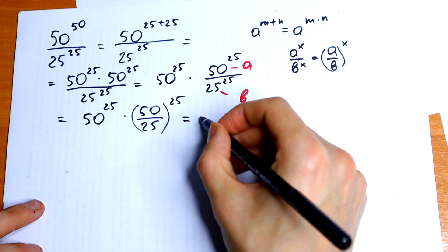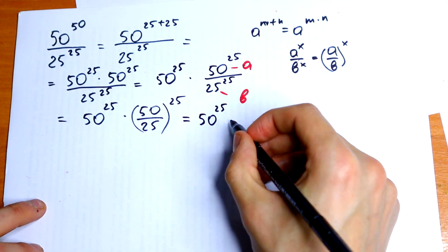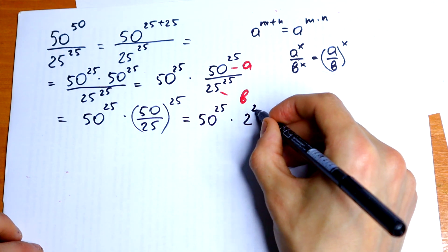It will be equal to 50 to the 25th power, I just let it right here, and right here I will get 50 over 25, it will be equal to 2 to the 25th power.